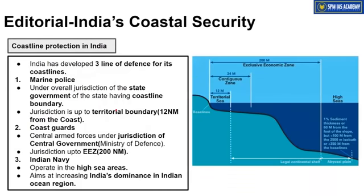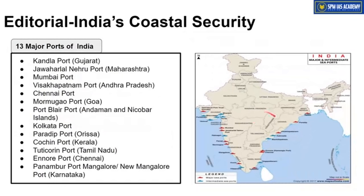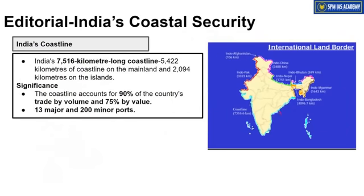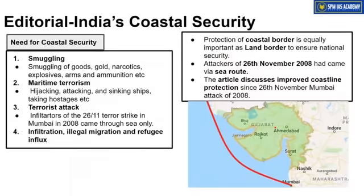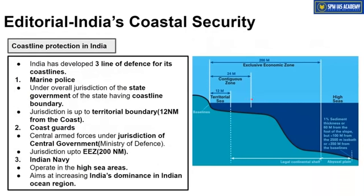Now let's look at what kind of structure exists in our country for coastline protection. First, understand the United Nations Convention on the Law of the Sea (UNCLOS) — this is the international law. According to it, approximately 12 nautical miles into the ocean from any country's territory is called the territorial sea. All water, resources, and land in this zone fully belong to that country. So 12 nautical miles from the coast is considered the territorial waters of India.